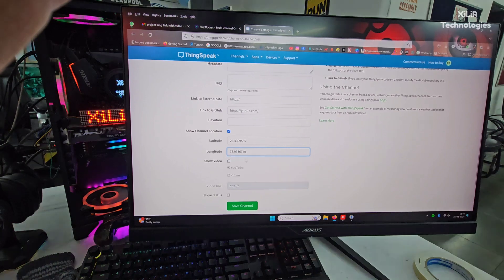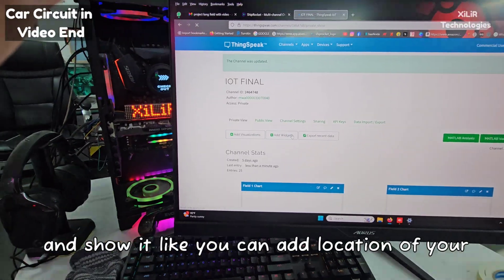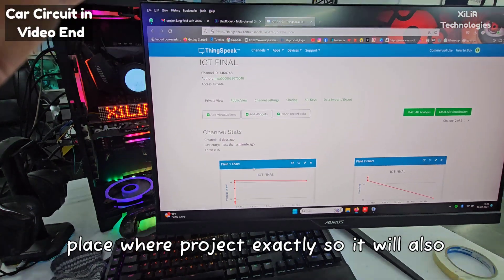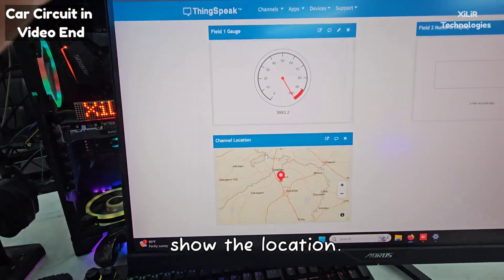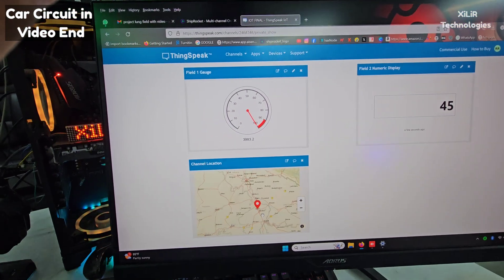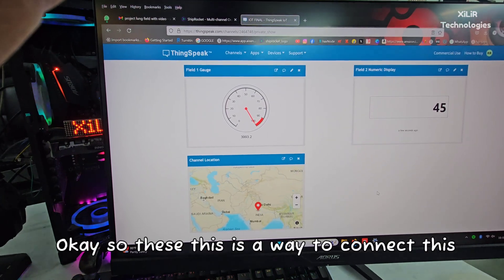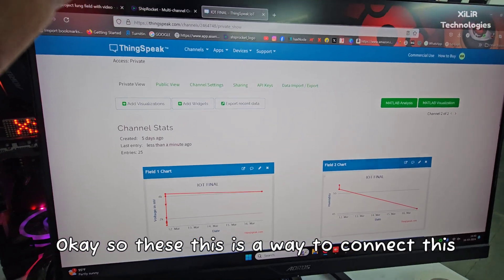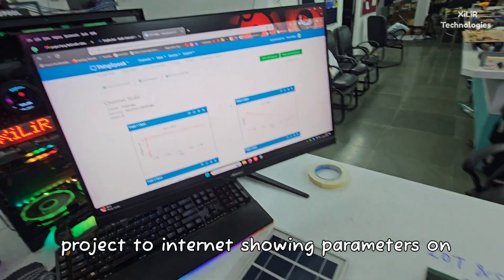If you want to add location, just use this and add some location here and show it. You can add the location of a place where the project exactly is, so it will also show the location. This is the way to connect this project to internet showing parameters on the website.